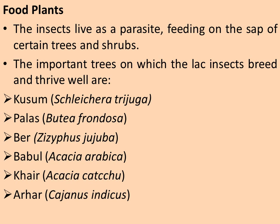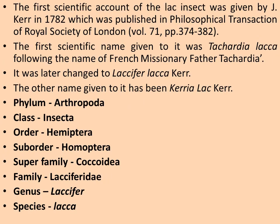The lac insect lives as a parasite feeding on the sap of certain trees and shrubs. The important trees on which lac insects breed and thrive well are kusum, palas, ber (Acacia arabica), kair (Acacia kathachoo), arhar (Cajanus syndicus), Zizyphus jujuba, and other Acacia species. These species are very commonly found in Rajasthan, and therefore lac cultivation is carried out on these trees in the state.